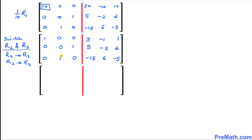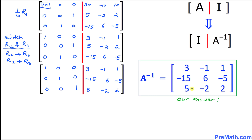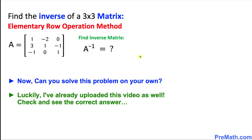We are almost finished — we need to switch rows 2 and 3. Doing this gives us an identity matrix on the left. The top row stays 1, 0, 0, with 3, negative 1, 1 on the right. The third row becomes the second row: 0, 1, 0, with negative 15, 6, negative 5. The second row becomes the third row: 0, 0, 1, with 5, negative 2, 2. Thus the left-hand side has transformed into the identity matrix, and the right-hand side is our A inverse matrix. Here is your assignment — can you do this one on your own?